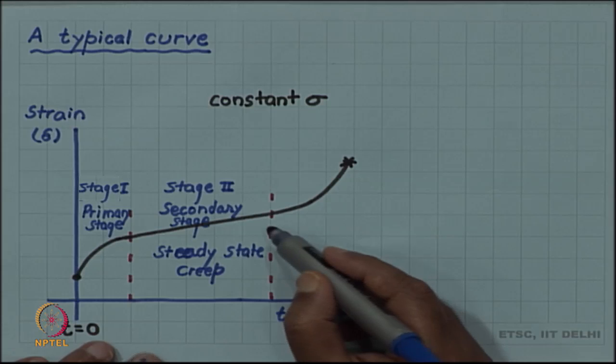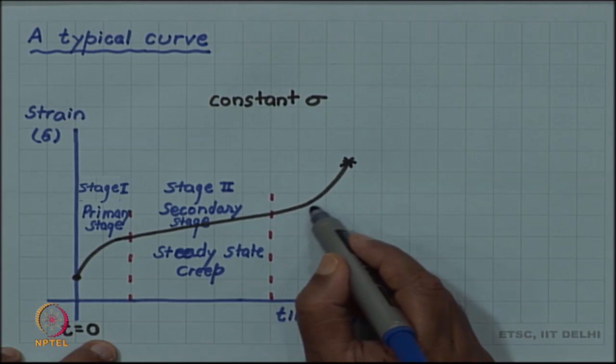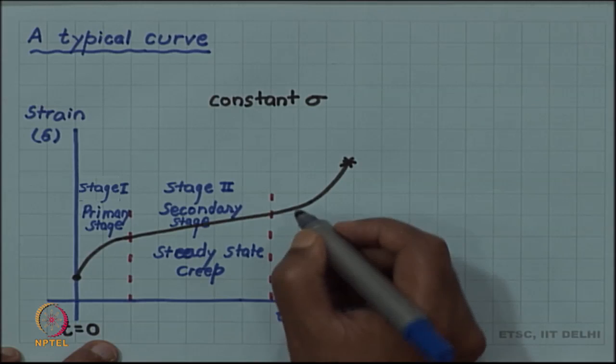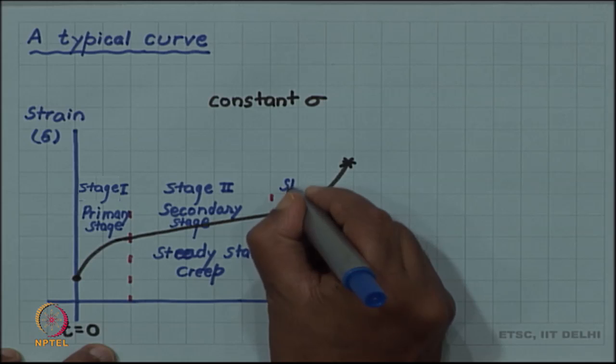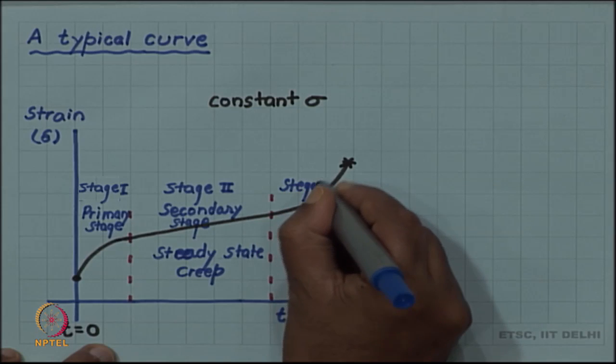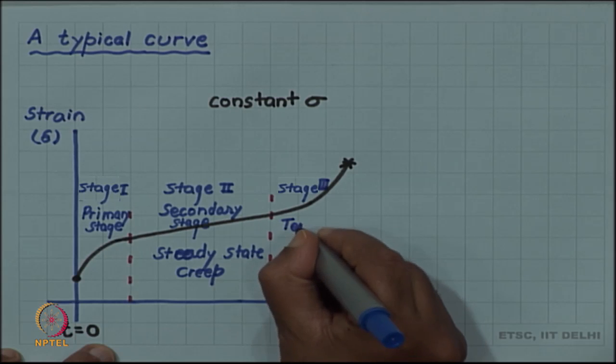And finally, at the end of the steady state creep, the creep rate again begins to rise and finally leads to fracture. This is called stage 3 or tertiary stage.